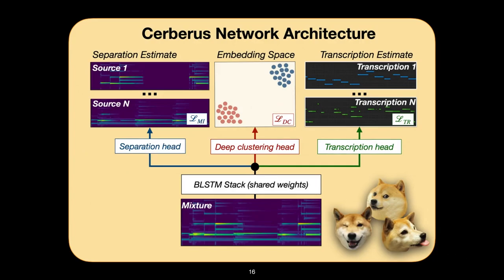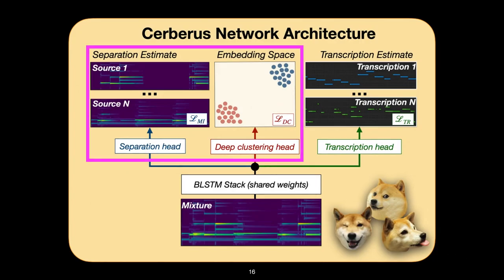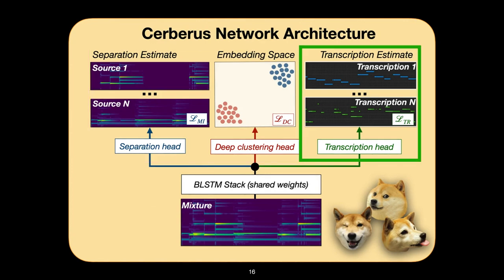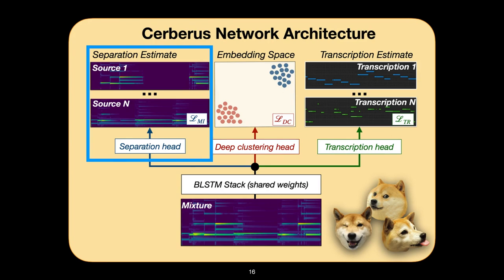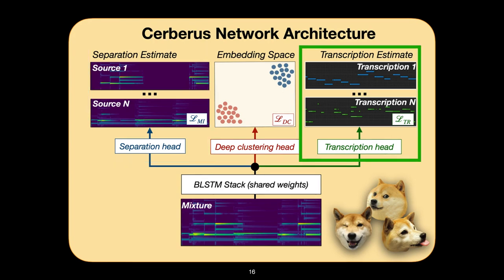The proposed work extends the two-headed chimera architecture. Chimera uses two output heads for source separation. We add a third head for the automatic transcription of musical mixtures containing multiple polyphonic and percussive instruments. We call this architecture Cerberus. Altogether, this architecture has three heads: a deep clustering head producing embeddings, a mask inference head creating masks that are applied to the mixture spectrogram, and a transcription head that produces a piano roll transcription for each instrument in the mixture.